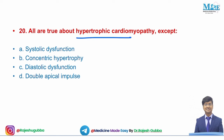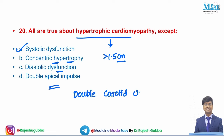Next question: all are true about hypertrophic cardiomyopathy except — systolic dysfunction, concentric hypertrophy, diastolic dysfunction, or double apical impulse. Systolic dysfunction is not present in HCM. HCM features concentric hypertrophy (myocardium >1.5 cm), diastolic dysfunction, double apical impulse, double carotid upstroke, and reverse pulsus paradoxus. The answer is systolic dysfunction.